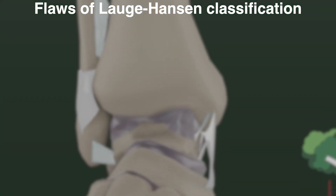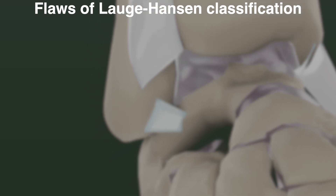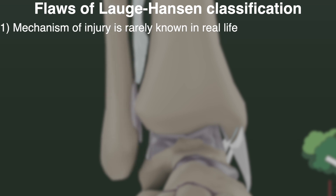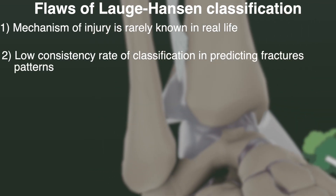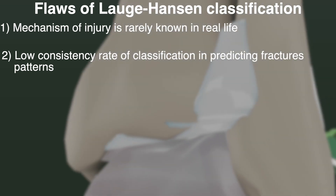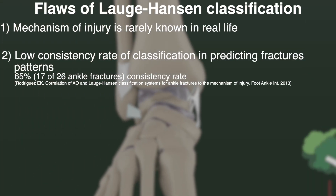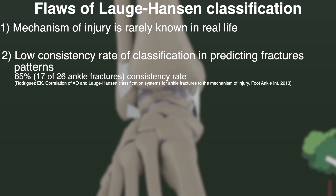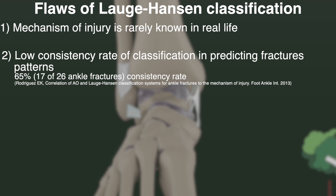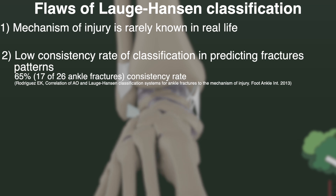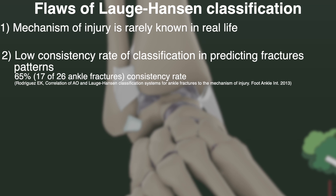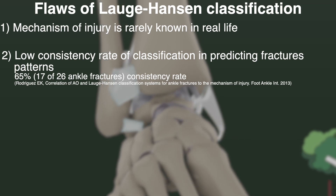There are some flaws of the Lauge-Hansen classification that should be noted. The first is that this classification relies on the mechanism of injury, which is rarely known in the clinical setting and is often speculated. The second is that studies have shown a low consistency rate in predicting fracture patterns from the deforming injury mechanism, whereas the AO/OTA classification was found to have a higher consistency rate. One major reason for this is that the original technique involved manipulation and application of forces by hand onto the fixed feet of cadavers, which fails to accurately simulate the in vivo forces experienced during a real ankle fracture.